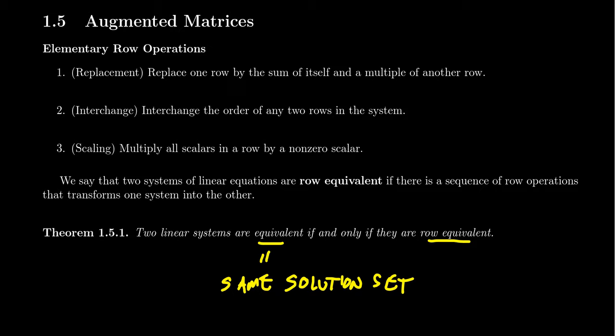So, performing row operations on a system of linear equations does not change the solution set of this system. And some of these are kind of easy to see. Interchange, you're switching the order of the equations. That shouldn't have any consequence. As I was mentioning before, if you multiply both sides of the equation by the same value, that's not going to change the solution. As long as it wasn't zero, because that just demolishes the equation, basically just throw it in the shredder at that point.